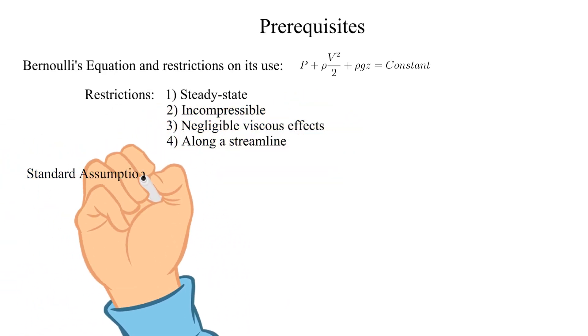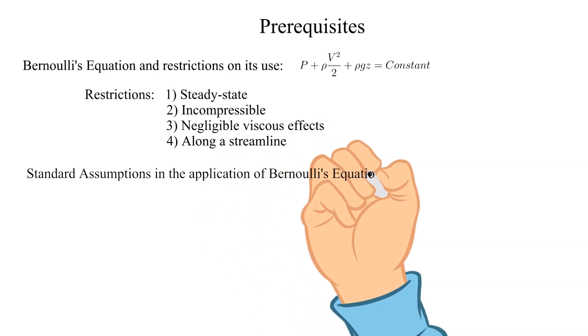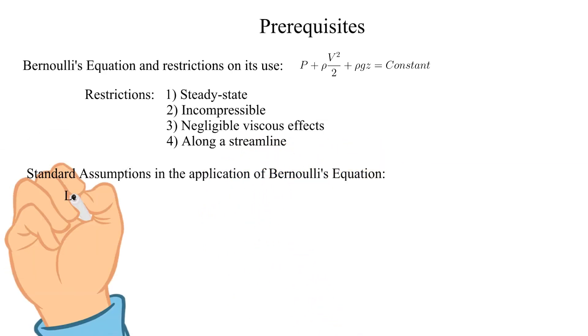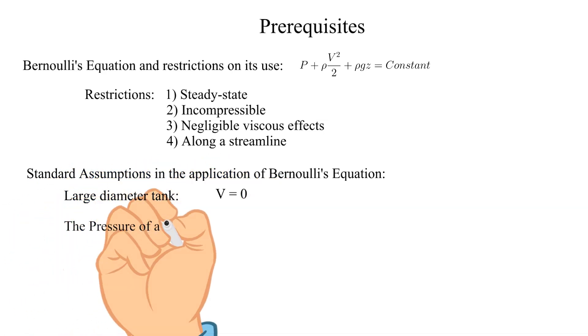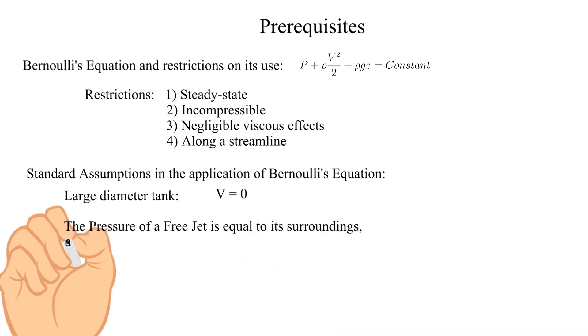We will also be making standard assumptions in the application of Bernoulli's equation. These were covered in a previous instructional snippet. The velocity in a large diameter tank is treated as equal to zero. The pressure of a free jet is equal to its surroundings, usually atmosphere.